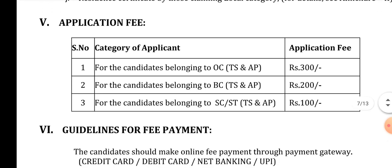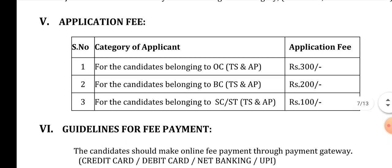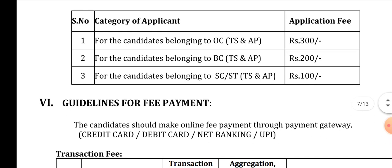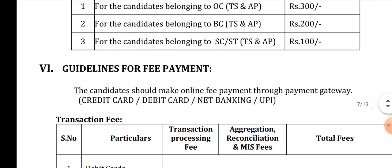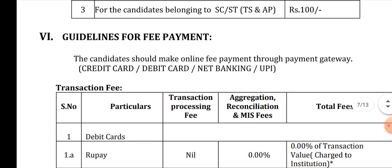First of all, OC fee is ₹300, BC fee is ₹200, and SC/ST, both APRTS are ₹100. So if you have a fee payment, you can get a few more details.